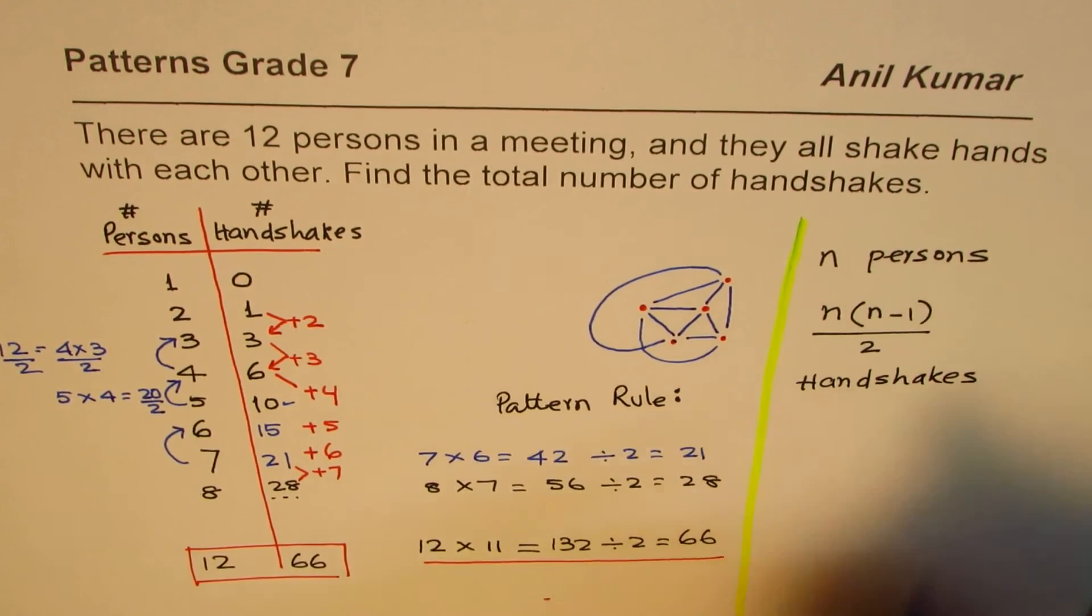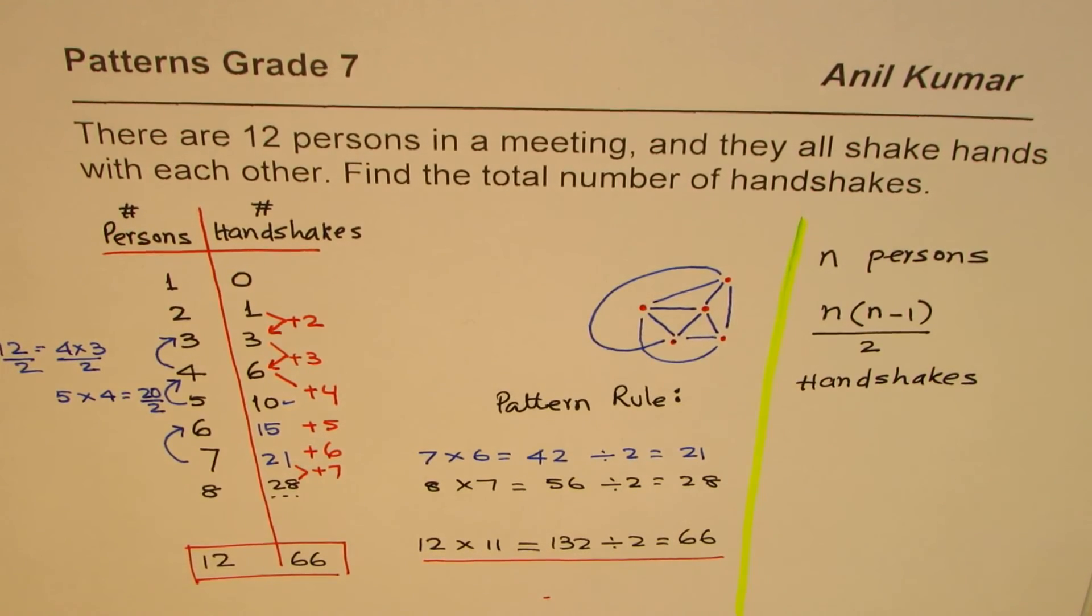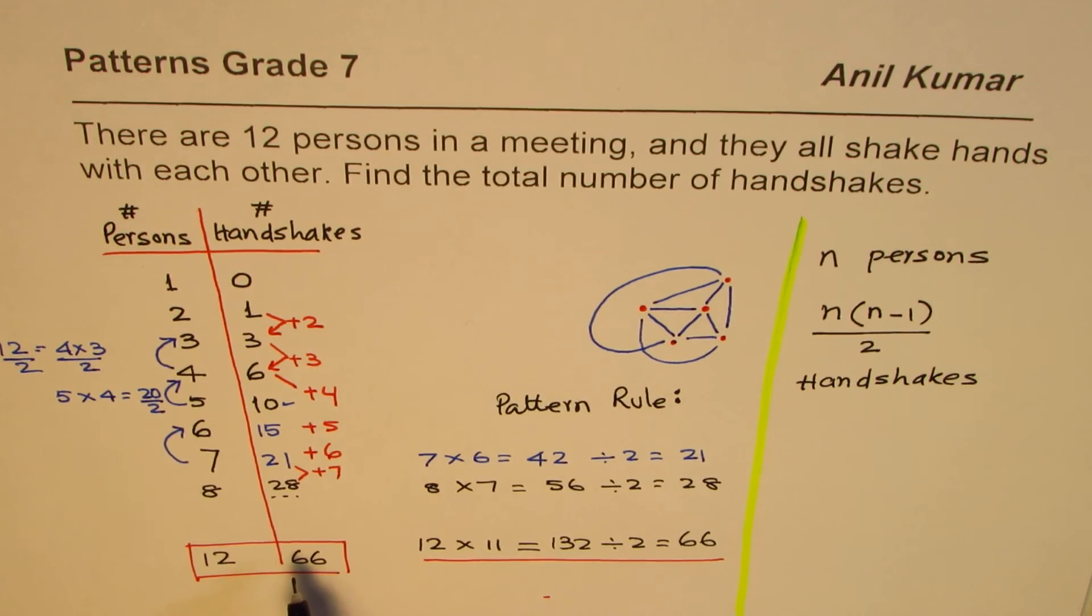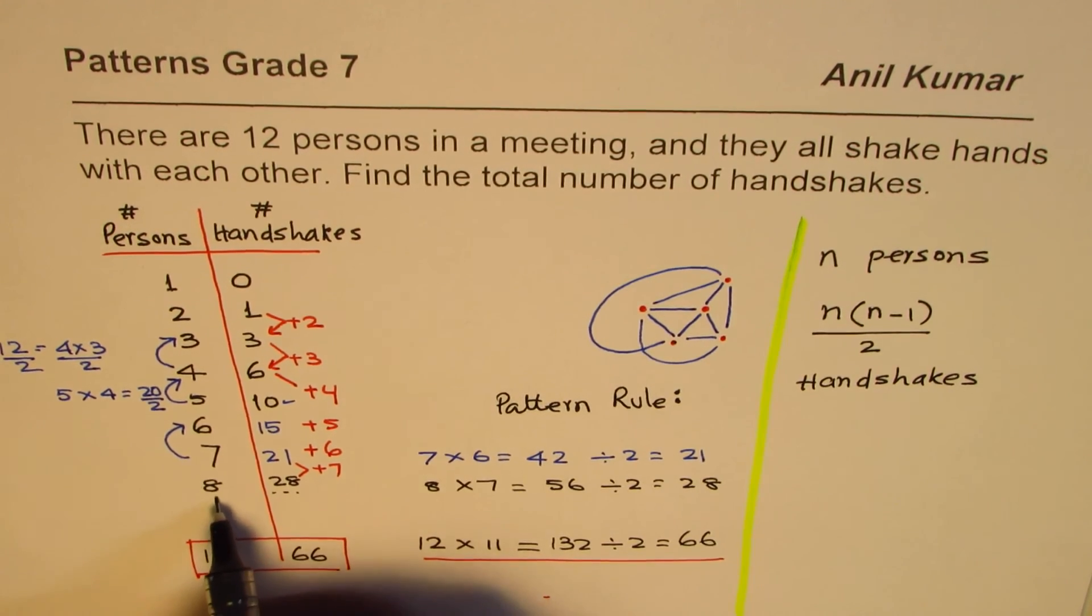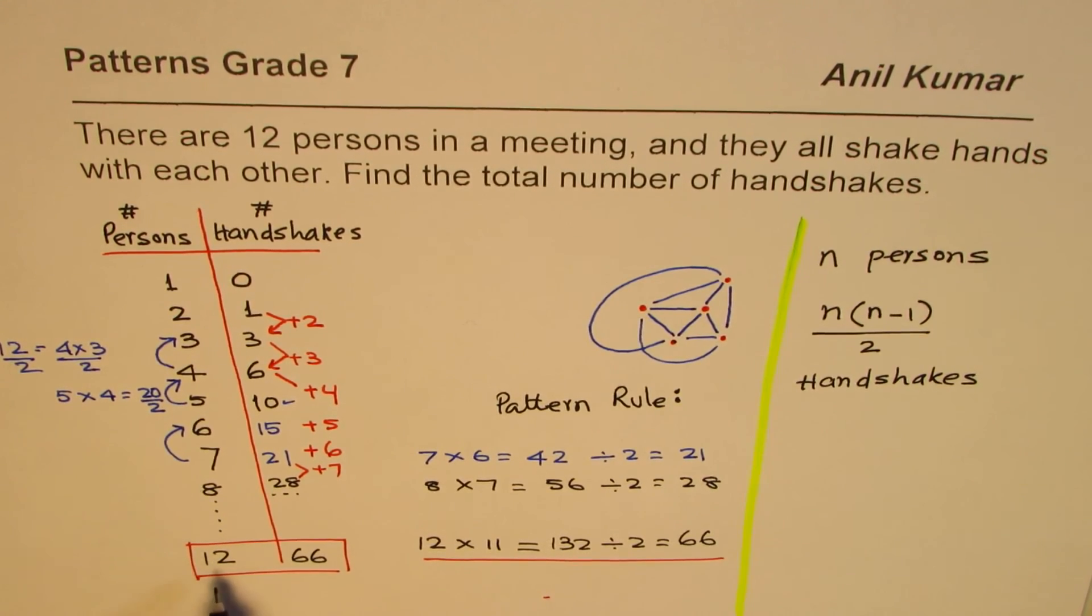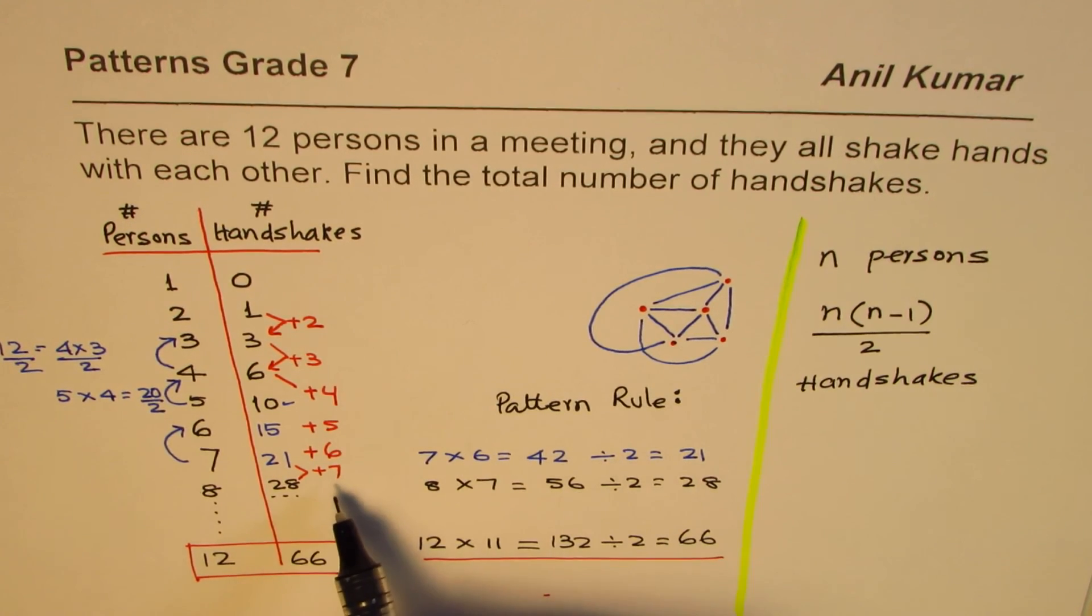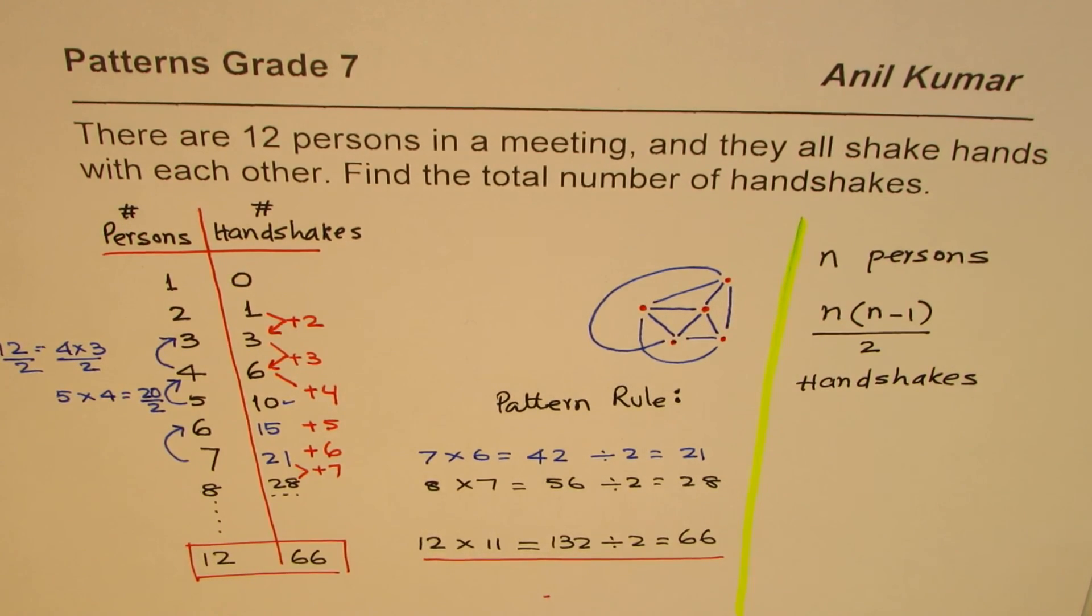That becomes the explicit rule by which we can find it. Now as an exercise, you can continue with this table and check do we really get 66 if we keep on adding one more number each time to the existing number. I hope you find it very interesting. I'm Anil Kumar. You can always share and subscribe to my videos. Thank you and all the best.